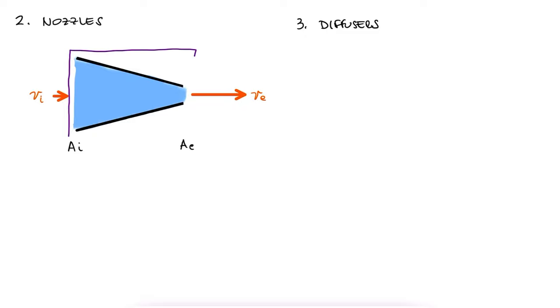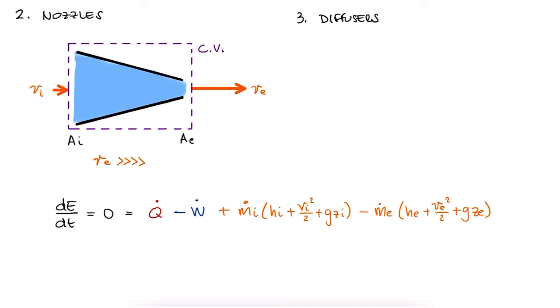With a typical control volume around this device, and noticing that the inlet velocity is going to be much smaller than the velocity at the exit, we can understand that we should probably never neglect the kinetic energy changes during our conservation of energy analysis. Usually, for both nozzles and diffusers, we don't add any heat or perform any work, which means that we don't have the q-dot or the w-dot terms.